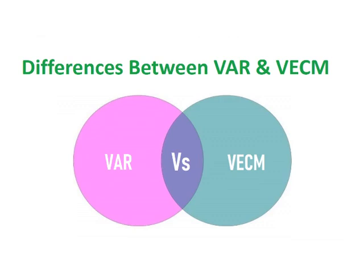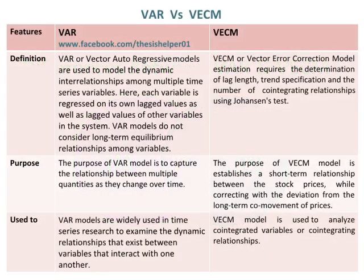VAR, or Vector Autoregressive Models, are used to model the dynamic interrelationships among multiple time series variables. Each variable is regressed on its own lagged values as well as lagged values of other variables in the system. VAR models do not consider long-term equilibrium relationships among variables.